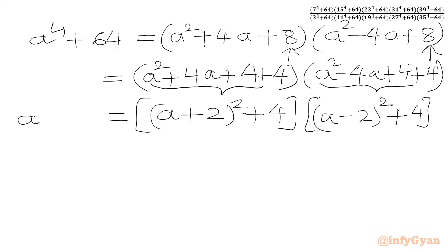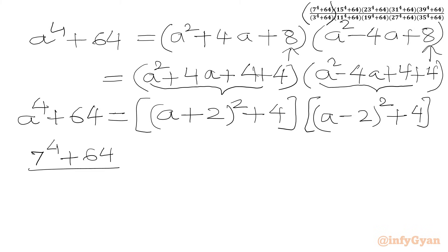Our factorization is done. a⁴ + 64 can be factorized as [(a + 2)² + 4][(a − 2)² + 4]. We are going to use this result for our expression simplification. I will consider the first ratio: 7⁴ + 64 from the numerator and 3⁴ + 64 from the denominator.